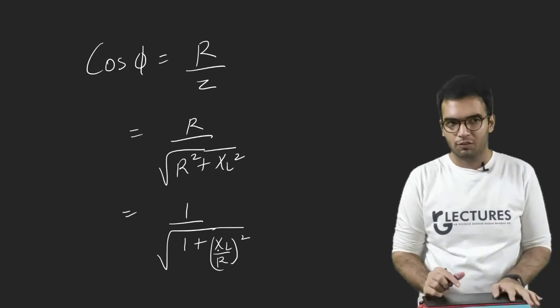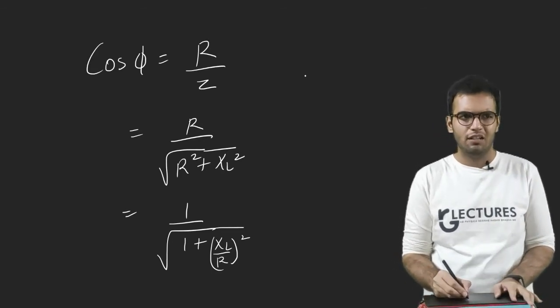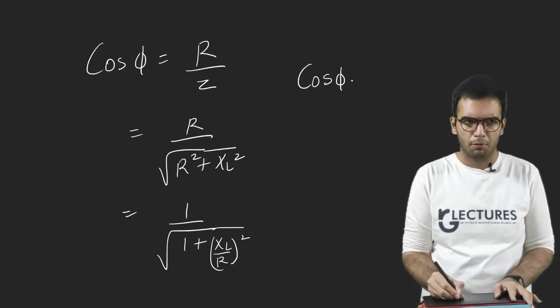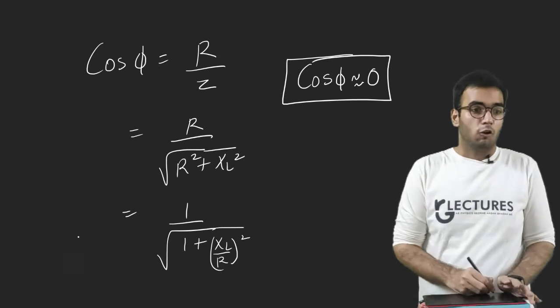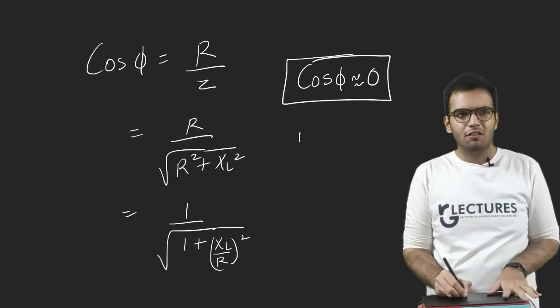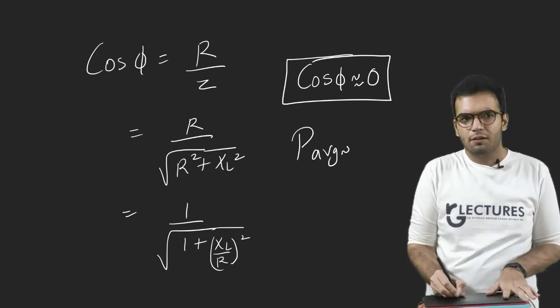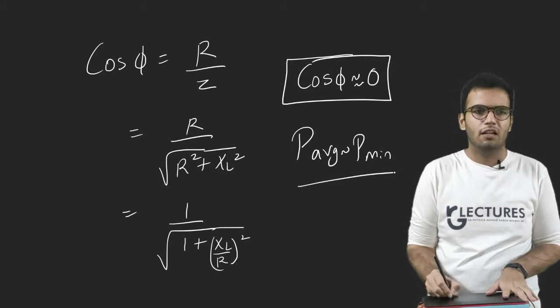If R is very, very small, this term will tend to infinite, which means cos φ will approximately be zero for our complete circuit. If cos φ is approximately zero, then power consumed will be minimum. And that is what we wanted.